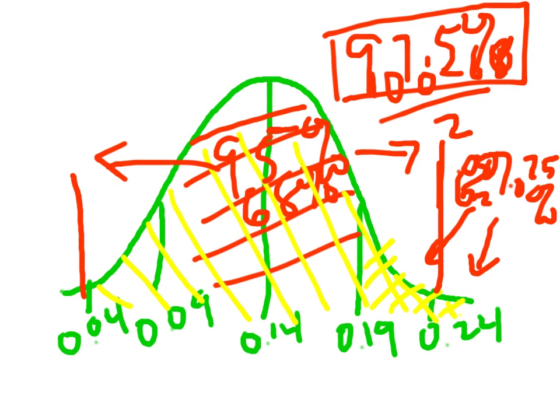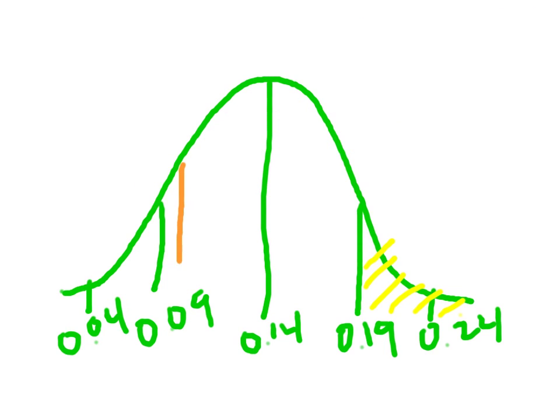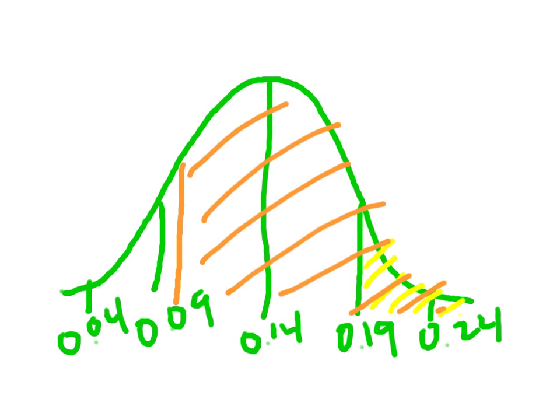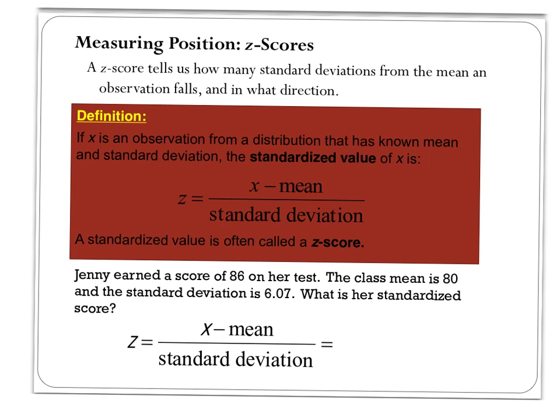So again, I can use the empirical rule to actually calculate just about any region in there, as long as the values that they give me occur right on one of the standard deviations. Right exactly one standard deviation above or one standard deviation below, or two standard deviations above or two standard deviations below. The question comes, well, what if the question was, what is the probability of getting more than 10%? Well, 10%, if you notice, is right here. And it doesn't occur right on one of those nice little lines. So I do not know the exact percentage there. So this requires us to look at a different way of solving these problems.